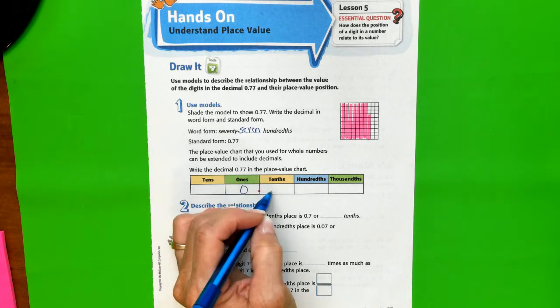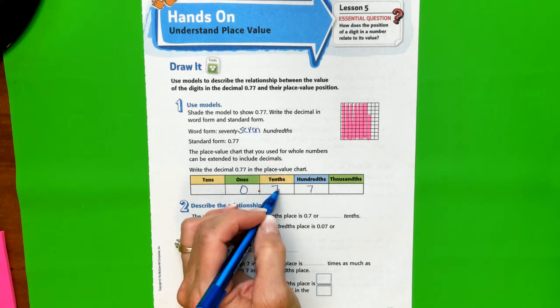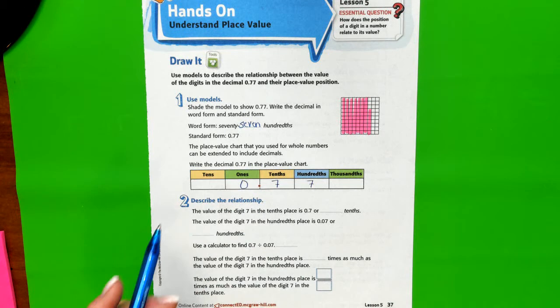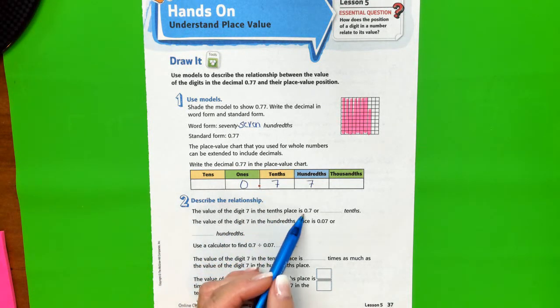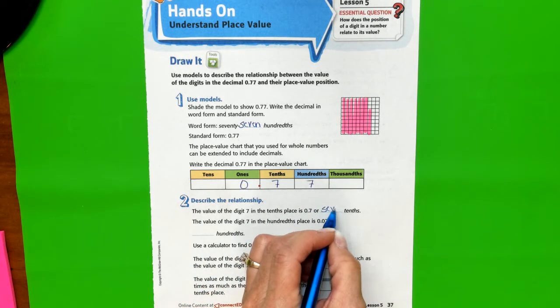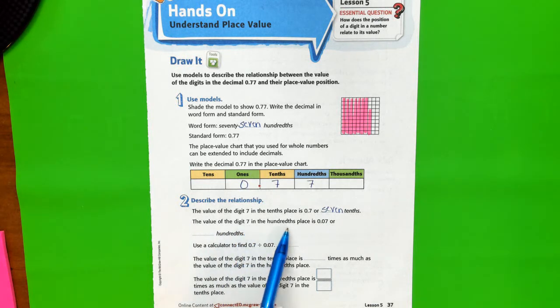Write the decimal 0.77 in the place value chart. We have no ones, we have no whole ones, and we have seven tenths and seven hundredths. Let's describe the relationship. The value of the digit in the tenths place is 0.7 or seven tenths. The value of the digit in the hundredths place is 0.07 or seven hundredths.